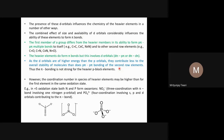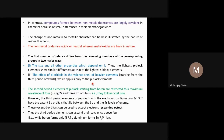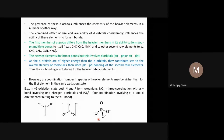The coordination number of heavier P-block elements can be higher than for the first member in the same oxidation state. For example, boron forms BF₄⁻ (coordination number 4), while aluminium forms AlF₆³⁻ (coordination number 6), due to the availability of vacant d-orbitals and the larger atomic size of aluminium, which can accommodate more surrounding groups.